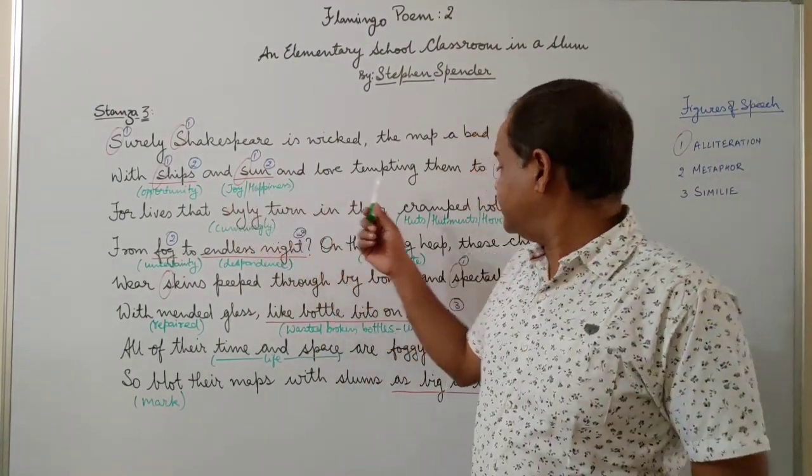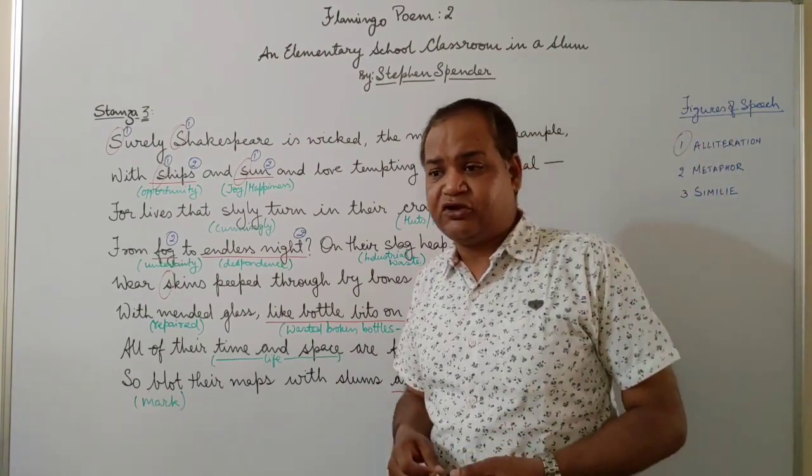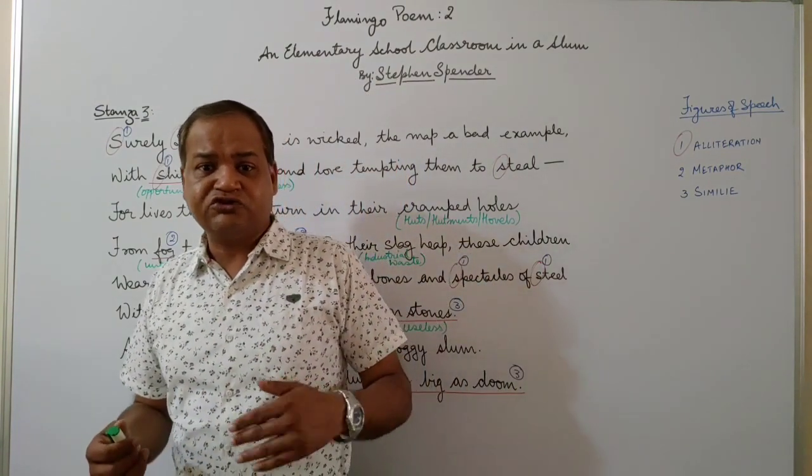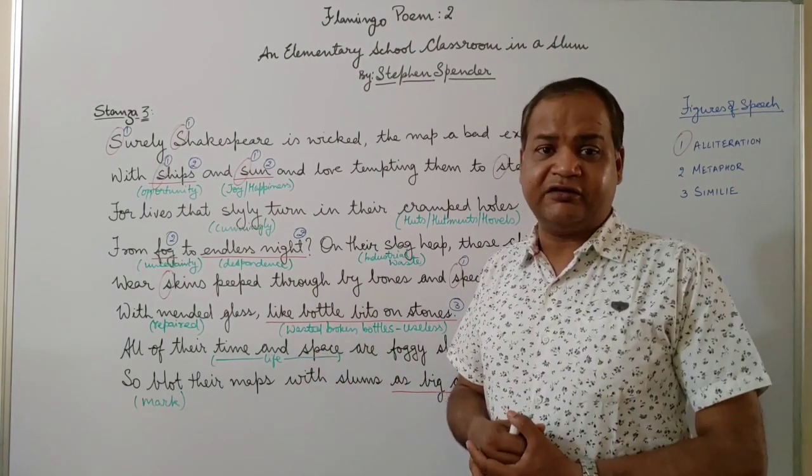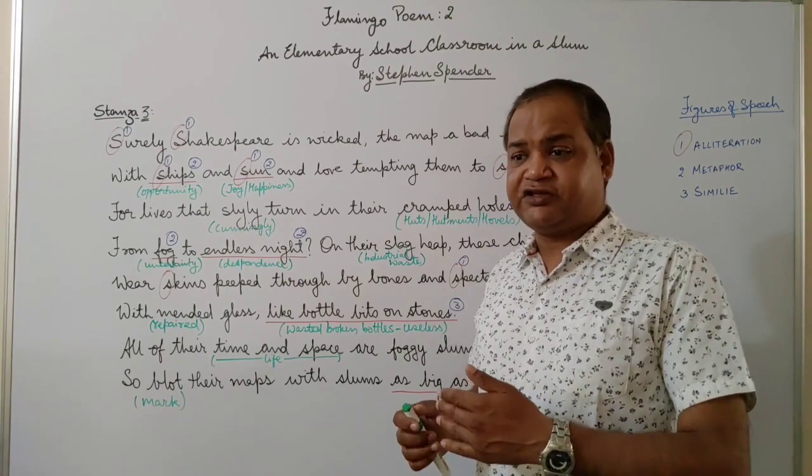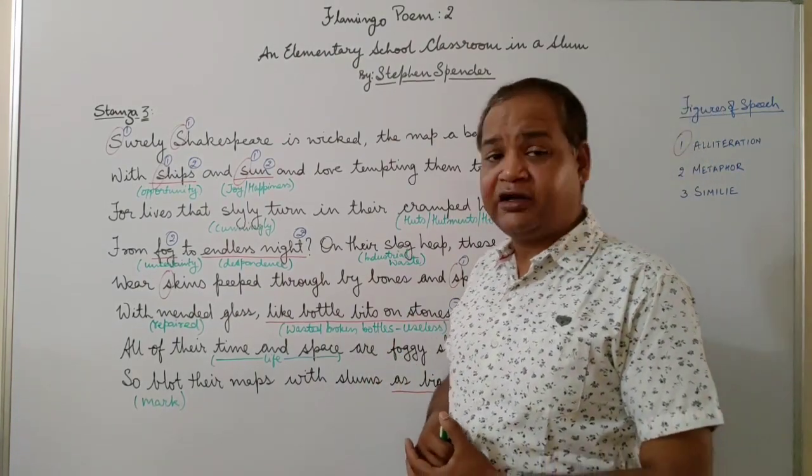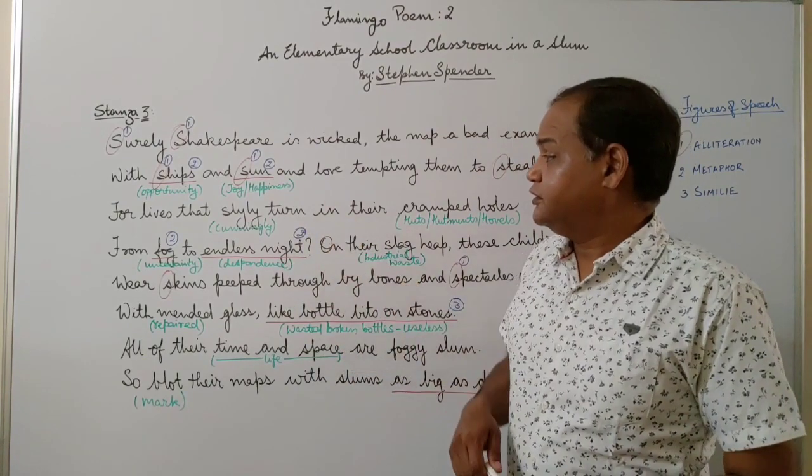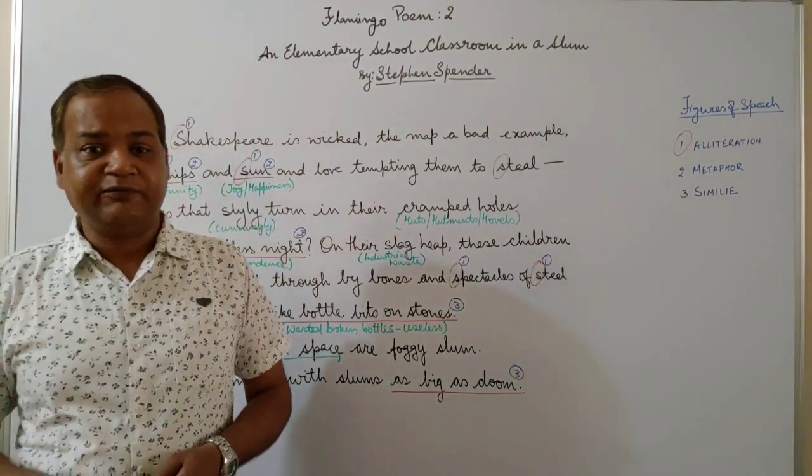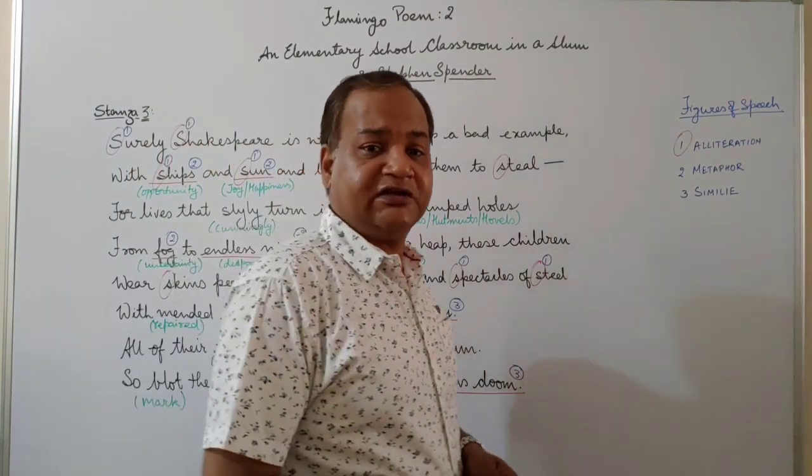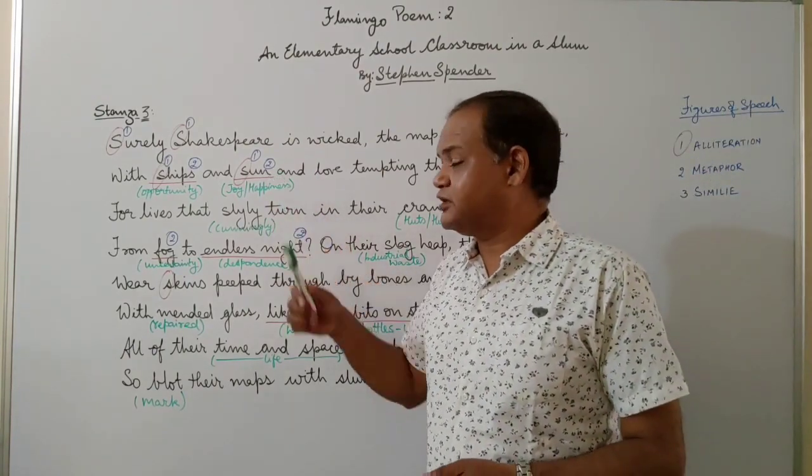In the next line he talks about 'with ships and sun and love tempting them to steal.' Now let us look at this: ships and sun and steel—we see an alliteration of 's'. Ships stand here for opportunity. Why is ship an opportunity? Because it takes you from one place to another place where you can go and do your own thing, become better economically and make your good fortune. Sun is a metaphor for joy and happiness because everything that is around us is because of the sun. No sun means darkness, darkness means sadness, darkness is doom. Sun is light, light is hope, hope is joy.